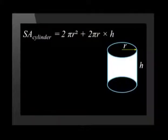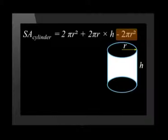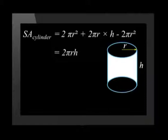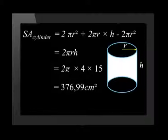Let's calculate the surface area of the cylinder. To calculate the surface area of the cylinder, we apply the general formula of 2 times the base plus the circumference of the circle times the height of the cylinder. But remember, we need to subtract 2 times the area of the base, which is 2 pi r squared. This gives us 2 times pi times r times h. With substitution, we get 2 times pi times 4 times 15, and this gives us an answer of 376.99 centimeters squared.